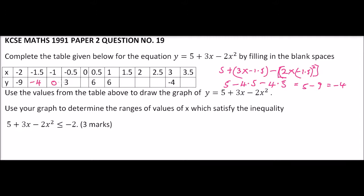Working through the remaining values: when x is 0, y is 5; when x is 1, y is 6; when x is 1.5, y is 5; when x is 2, y is 3; when x is 2.5, y is 0; and when x is 3.5, y is minus 9. We have now filled the table and can proceed to plot the graph of y equals 5 plus 3x minus 2x squared.